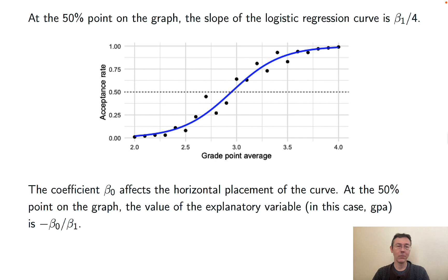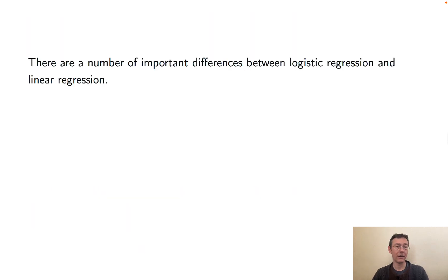And so for this example, we can compute it because beta 0 was negative 12.04, beta 1 was 4.08, according to our fit that we got using R, saying that the grade point average of 2.95 corresponds to a 50% acceptance rate. And you can verify that visually on that plot there.